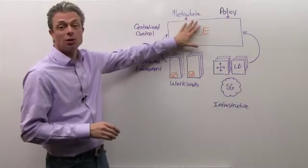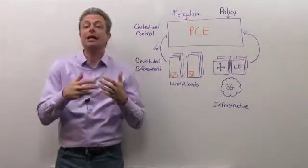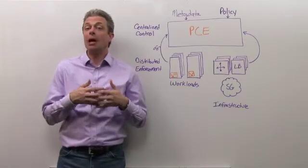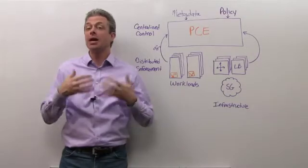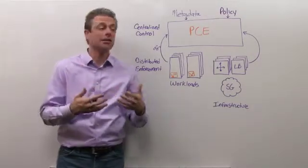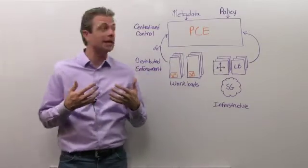That information is all taken into the policy compute engine, where it's then analyzed using graph theory. And what we're able to do then is actually draw rich application dependency maps that show the exact connectivity of all the various workloads and components inside the data center.